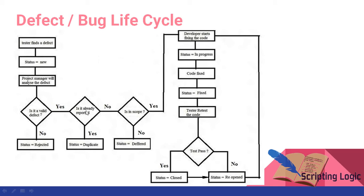If this bug is already reported, then its status is duplicate. If not, then it is checked whether this bug is in current scope or not. This means, is it okay to fix this bug in the next build or next version of this software?